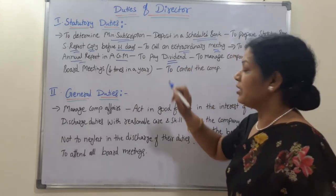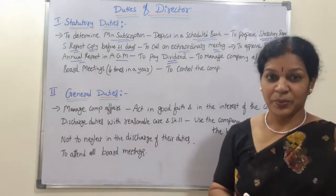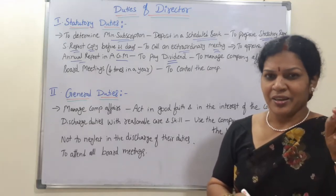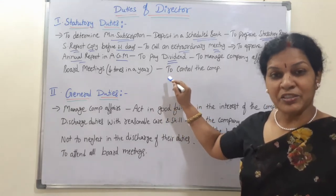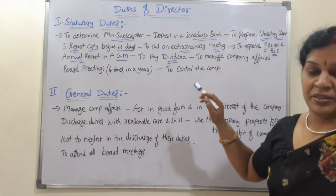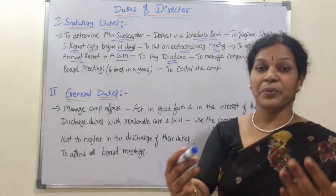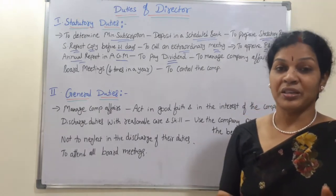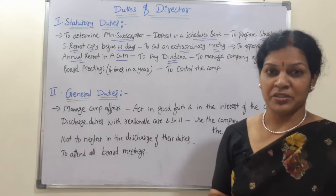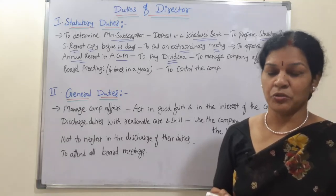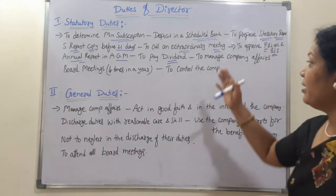The seventh statutory duty is to pay dividends. The director decides how much dividend is to be paid. Deciding the dividend is a right; paying it is the duty. The director must ensure dividends are properly distributed to shareholders, and there must be no complaints, mistransparency, misleading information, or concealment of facts in this process.